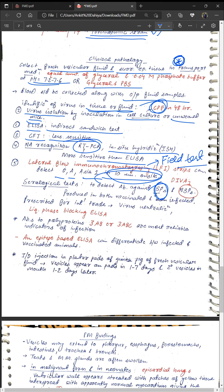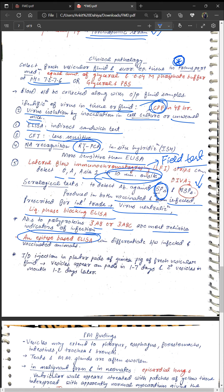For serology: tests detect antibodies against structural and non-structural proteins. Structural proteins VP1, 2, and 3 are produced in both vaccinated and naturally infected animals, so antibodies against them cannot differentiate vaccination from natural infection. Therefore, a non-structural protein test should be used. Tests prescribed for international trade include virus neutralization and liquid-phase blocking ELISA. Antibodies to polyproteins 3AB or 3ABC are the most reliable indicators of infection. Epitope-based ELISA can differentiate between infected and vaccinated animals. Intradermal injection of fresh vesicular fluid into plantar pads of guinea pigs leads to vesicles on footpads in 1–7 days and secondary vesicles on the mouth in 1–2 days.